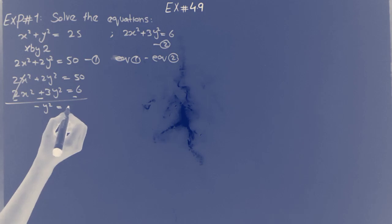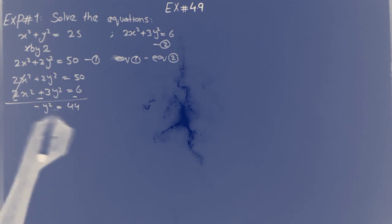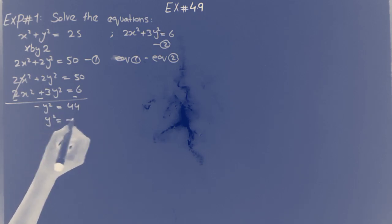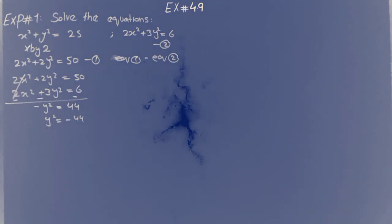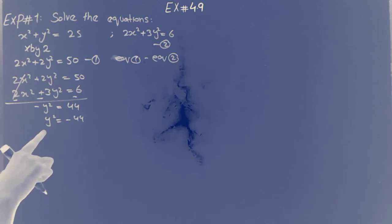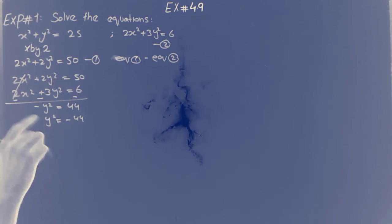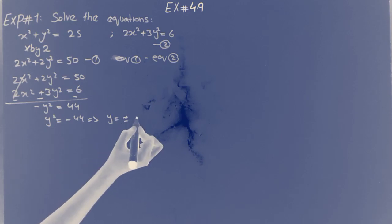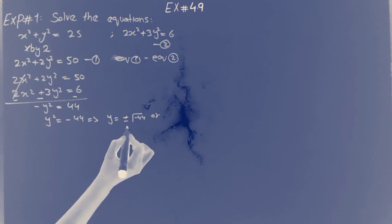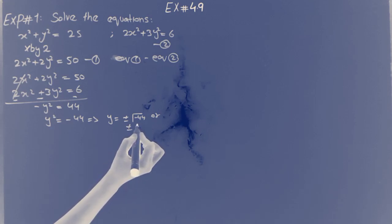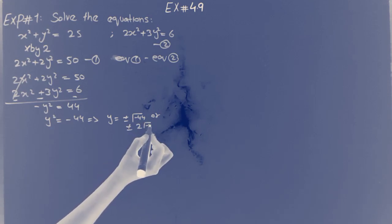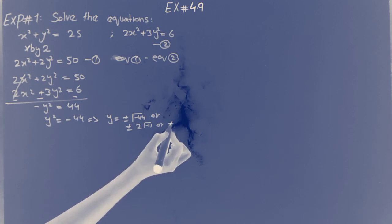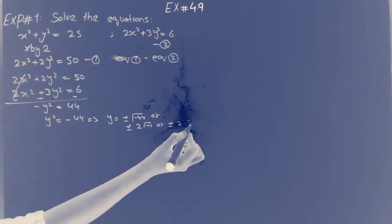After subtracting, minus y-square equals 50 minus 6, giving minus y-square equal to 44. So y-square equals minus 44. Taking the square root, y equals plus or minus 2 times square root of minus 11.